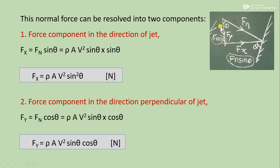Now this force can be divided or resolved into two parts. One is horizontal component, other is vertical component, that is in the direction of jet Fx and perpendicular to the direction of jet, Fy. So Fx equals Fn sin θ, which is ρAV² sin θ times sin θ, meaning Fx becomes ρAV² sin² θ.